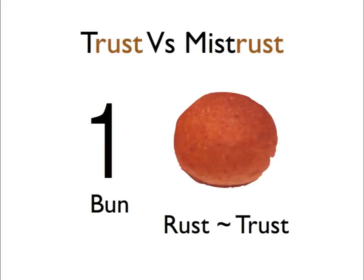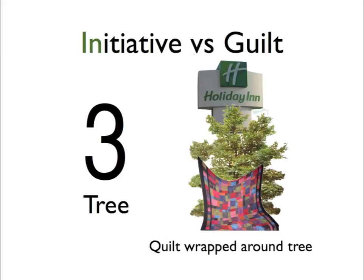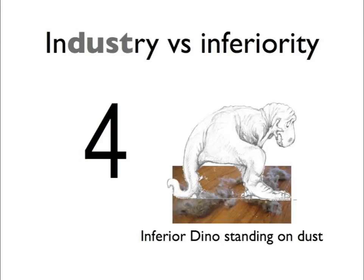Let's do a quick review. One is a bun — the bun is rusty, rust, trust versus mistrust. Two is a shoe — picture the shoe with wheels, autonomy versus shame. Three is a tree — what's behind that tree? Holiday Inn and the quilt that reminds us of guilt, initiative versus guilt. Number four is a dinosaur standing on some dust — dust, industry — and the dinosaur is looking pretty inferior, so industry versus inferiority.